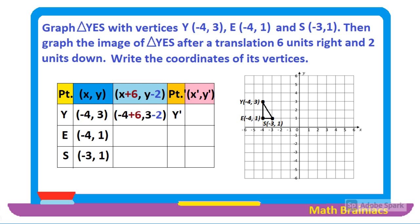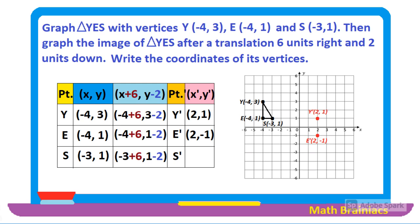For the translated point of Y: x coordinate is −4 + 6 = 2, and y coordinate is 3 − 2 = 1, giving Y prime at (2, 1). For the translated point of E: the ordered pair of E prime is (2, −1), so when x is 2, y is −1. For point S: x coordinate is −3 + 6 = 3, and y coordinate is 1 − 2 = −1, so S prime is (3, −1). Connecting the points with a red line gives us the translated figure — 6 units to the right and 2 units down.